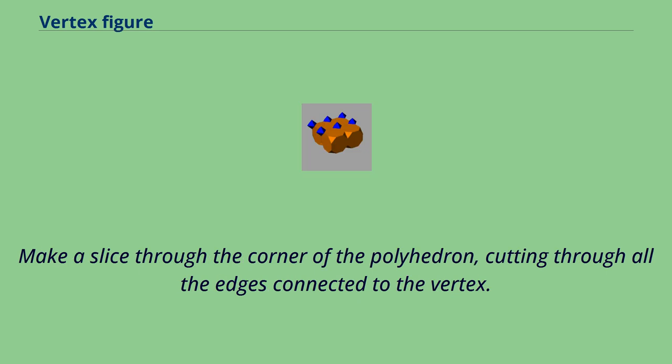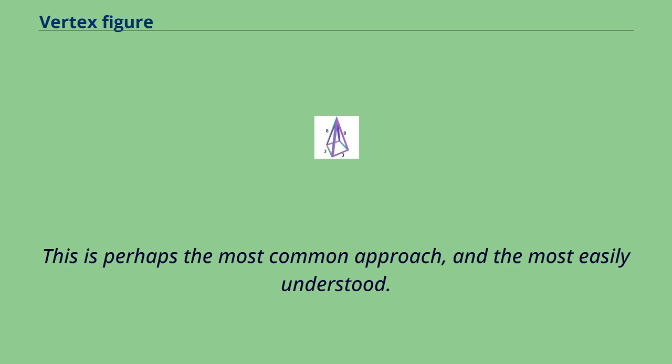Make a slice through the corner of the polyhedron, cutting through all edges connected to the vertex. The cut surface is the vertex figure. This is perhaps the most common approach and the most easily understood.